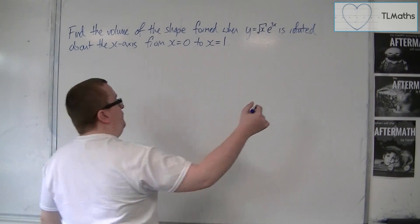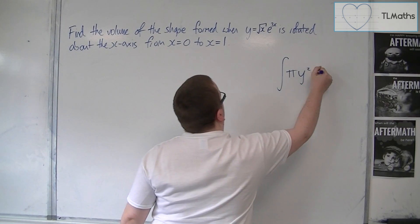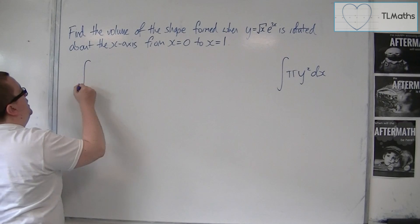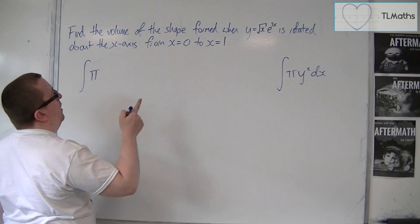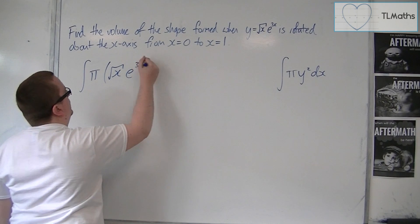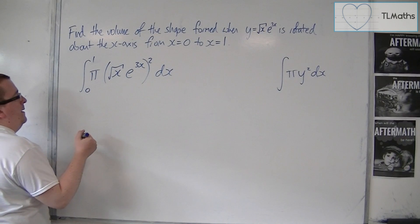So, the integral that we need is the integral of pi y squared dx. So, we're going to have the integral of pi times y squared, so root x, e to the 3x all squared dx, evaluated between 0 and 1.